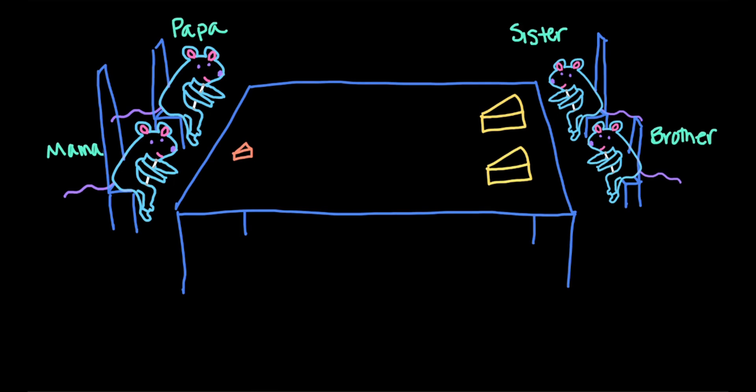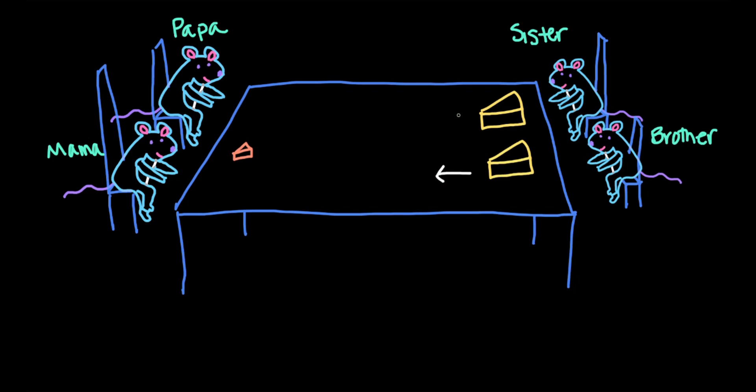Papa rat asks for the cheddar cheese and there are two identical blocks. Brother rat pushes one and sister rat pushes the other so that the second cheese is traveling twice as fast as the first cheese. Which piece of cheddar cheese do you think has more kinetic energy? Yes, it's the one going faster.